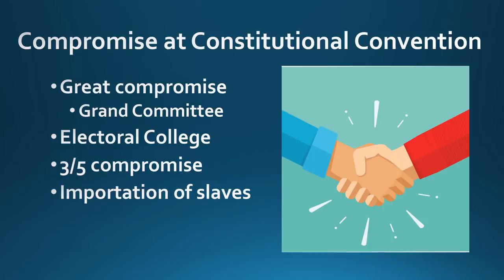The three-fifths compromise dealt with the issue of slavery. Southern states wanted slaves to count as people because that would have gotten them more representation in Congress. The compromise was that they would count as three-fifths of a person, causing the South to be over-represented in the House of Representatives and the electoral college. They also agreed to push off the matter of the slave trade for 20 years. These compromises made it possible to get the constitution ratified.